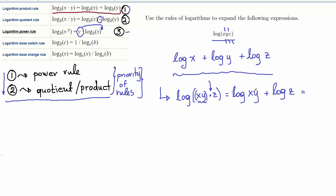Now, I can reapply the product rule right here, because I have x times y inside my logarithm, and I can rewrite it as log of x plus log of y. And this is added to the log of z. Since there is no priority here on my operations, the whole thing is nothing else than log of x plus log of y plus log of z.